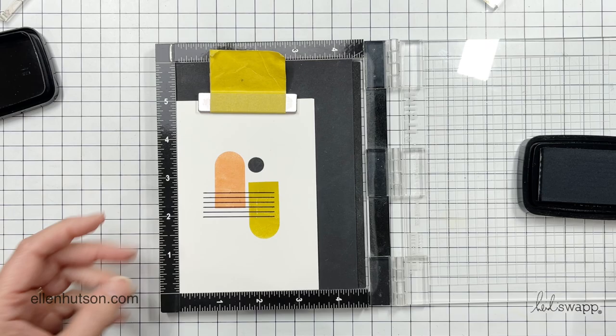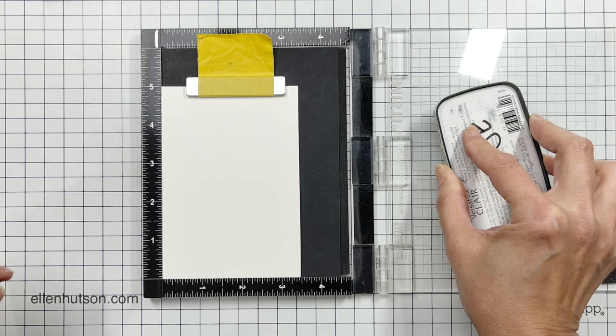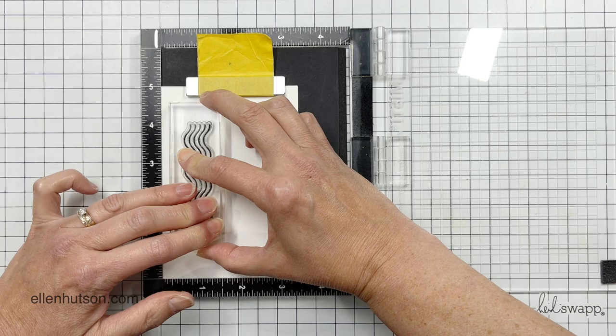And then to add a little bit of pattern and interest to this particular card I grabbed those stripes and I made sure that they were going horizontal. I think this is a really great way to create some fun, very simple, very easy abstract art that we're just using stamps, ink, and paper, nothing else.